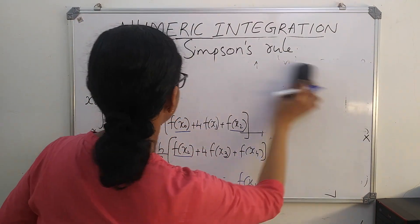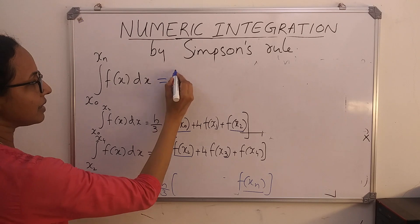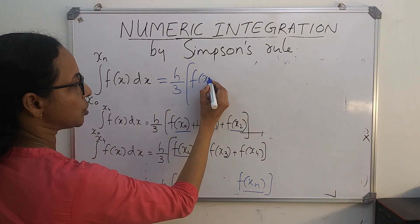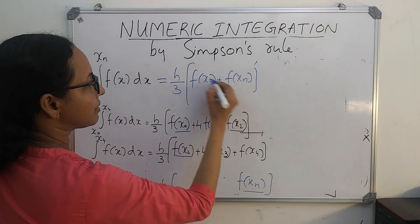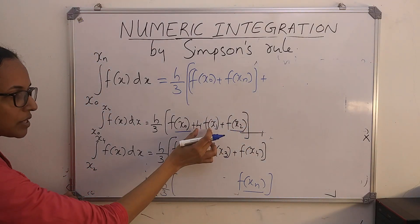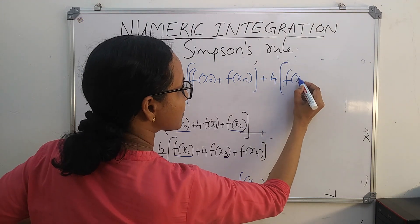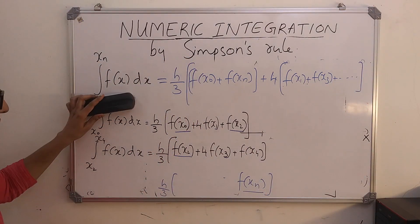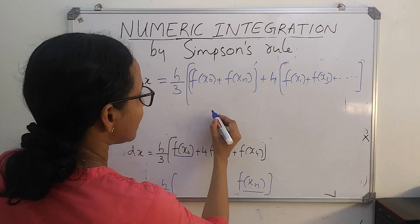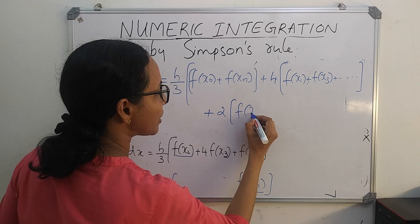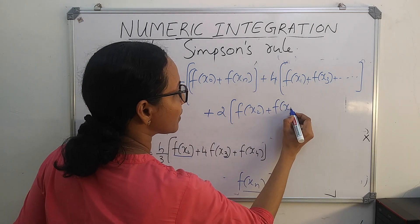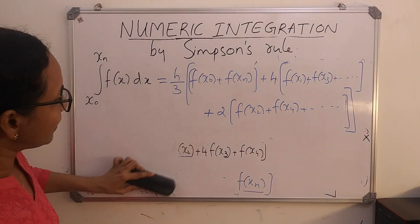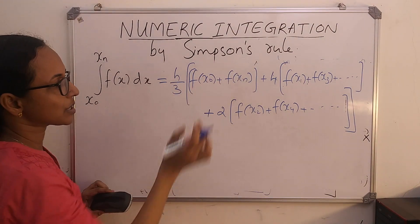By adding all these terms, we can write the formula in this form: h by 3 into first term plus last term only once, that is f of x0 plus f of xn, plus four times all odd suffix terms, that is four into f of x1 plus f of x3 plus f of x5 etc., plus two times all even suffix terms, f of x2 plus f of x4 plus f of x6 etc. This is the formula for evaluating this definite integral by using Simpson's rule.